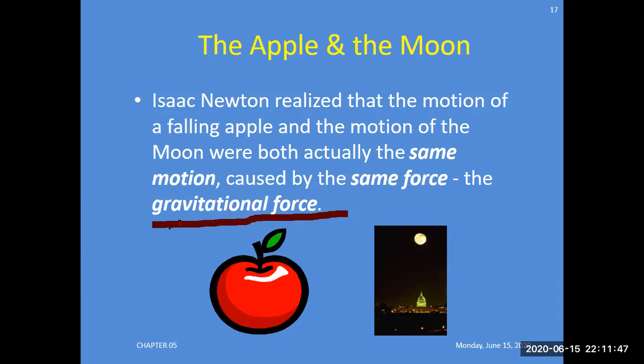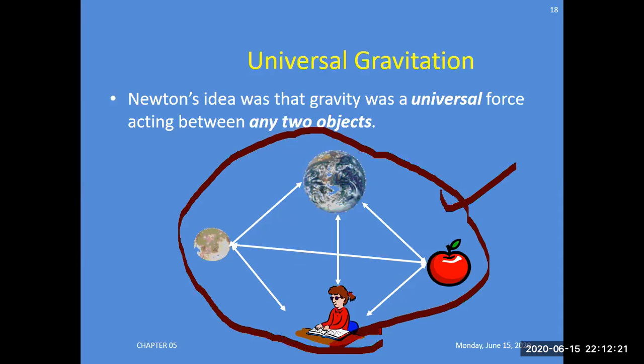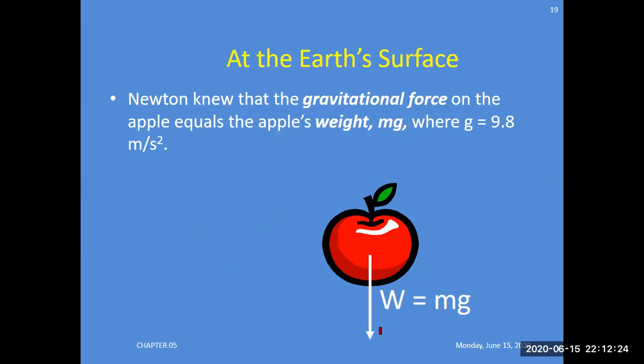Newton gave another important theory: what causes objects to fall down? Gravitational force. Universal gravitation: Newton's idea was that gravity was a universal force acting between any two objects—between the Moon and a person, an apple and a person, the Moon and Earth, and any objects. This is the concept of gravitational force acting on objects. There is a force acting between two objects called universal gravitational force.